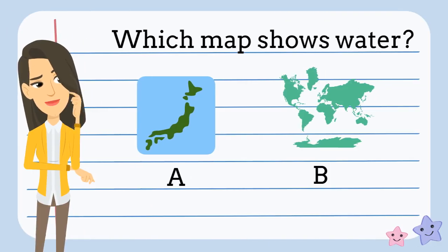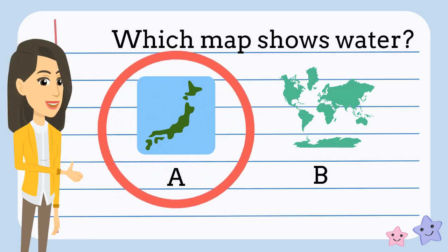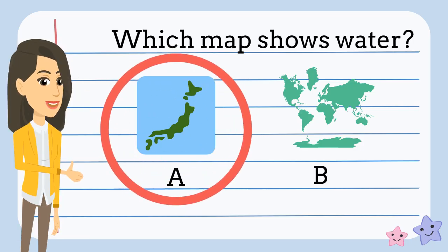Which map has water on it? A or B? What do you think? You're right. Map A shows water.